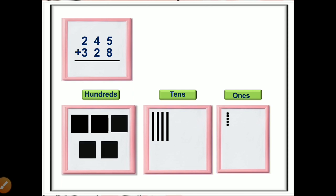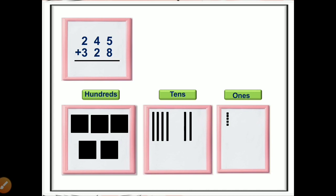Similarly, in the number 328, 3 is in the hundreds position so we will take three bigger square blocks. 2 is in the tens place so we will take two more sticks. And 8 is in the ones position so we will take eight more small square blocks. Now we will start our addition — first we will add the ones position.